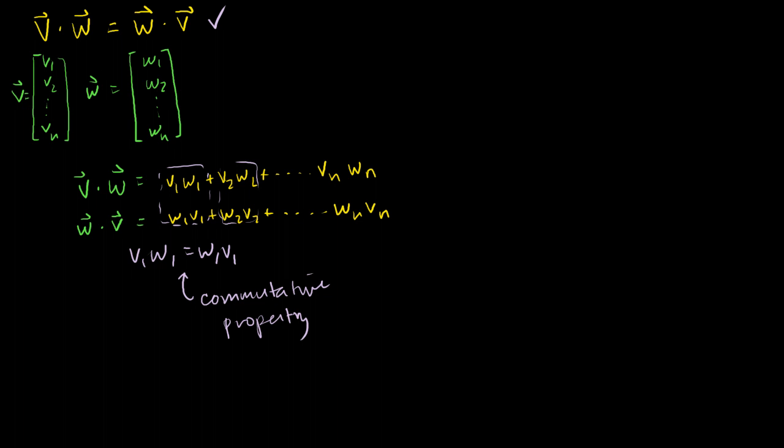Now the next thing we could look at is whether the dot product exhibits the distributive property. So let me define another vector x here. Another vector x, and you can imagine how I'm going to define it: x1, x2, all the way down to xn. Now, what I want to see, if the dot product deals with the distributive property the way I would expect it to, then if I were to add v plus w and then multiply that by x,